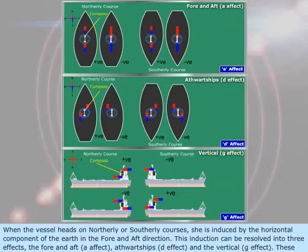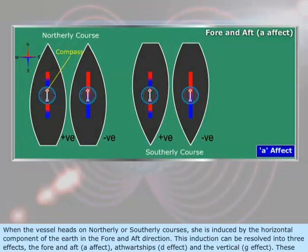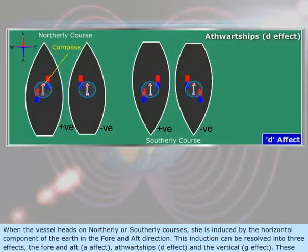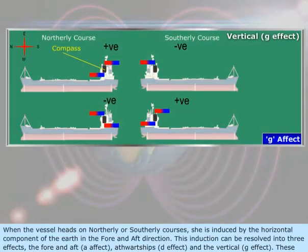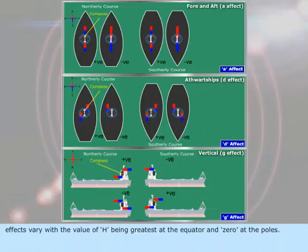This induction can be resolved into three effects: the fore and aft A effect, the athwartships D effect, and the vertical G effect. These effects vary with the value of H, being greatest at the equator and zero at the poles.